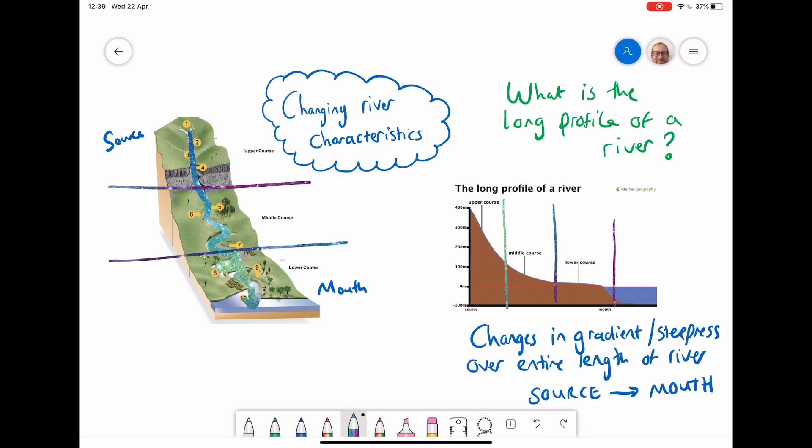And what you can see there is that on the upper course, it is very, very steep. In the middle course, it is still at points steep but it's got more gentle. And by the time we're in the lower course, it is very flat, very gentle in terms of the gradient.